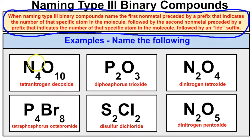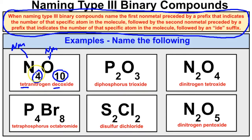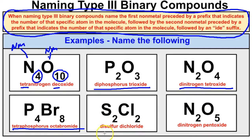For example, N4O10 — both N and O are non-metals, so this is a type 3 binary compound. The subscript 4 converts to the prefix 'tetra' and the subscript 10 converts to 'deca,' giving us tetranitrogen decoxide. P2O3 is diphosphorus trioxide. N2O4 is dinitrogen tetroxide. P4Br8 is tetraphosphorus octabromide. S2Cl2 is disulfur dichloride. And N2O5 is dinitrogen pentoxide.